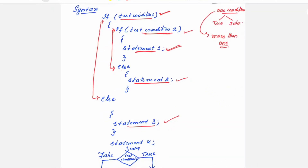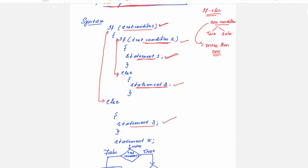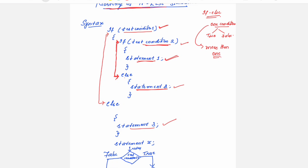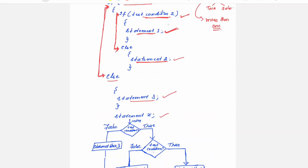Let me show this on one screen. This is the inner if-else and this is the outer if-else. If the outer if-condition fails, then the else part will get executed and statement x will execute. If test condition 1 is true, then test condition 2 is tested. If test condition 2 is true, statement 1 is executed and control comes directly to statement x. If test condition 2 is false, statement 2 is executed followed by statement x.